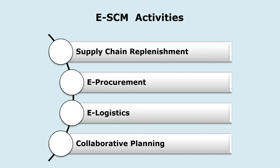Orders for replenishment can be placed automatically. E-logistics optimizes distribution routes effectively. And in collaborative planning, both buyers and sellers can share and forecast plans, based on which business organizations can prepare for future requirements.